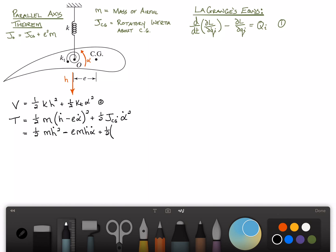And then we can simplify it a little bit more. One-half mh dot squared minus e m h dot alpha dot plus one-half, and then using the parallel axis theorem, this is just j sub zero alpha dot squared. And we'll call that equation three.